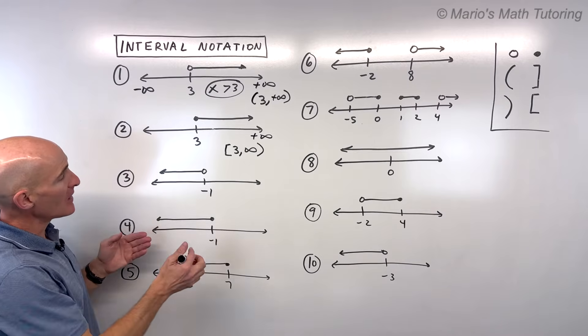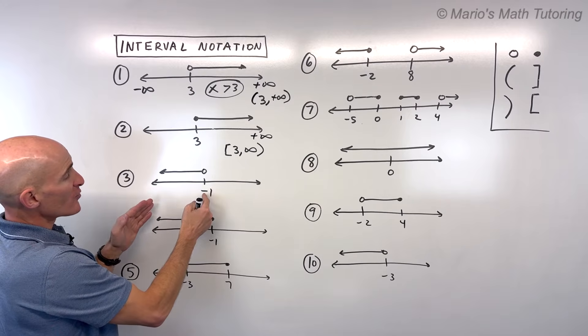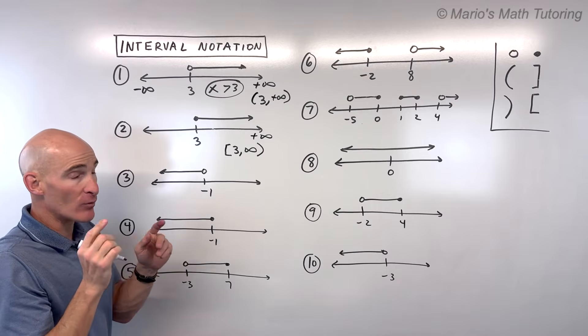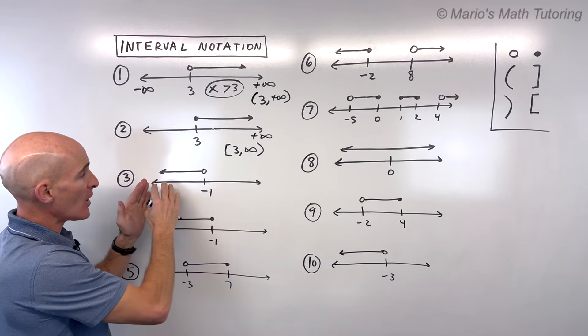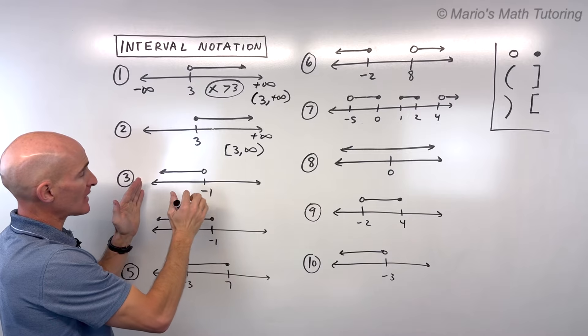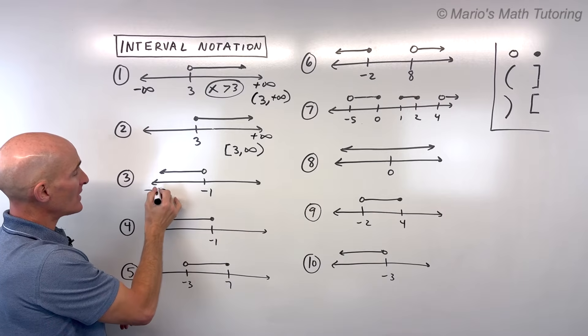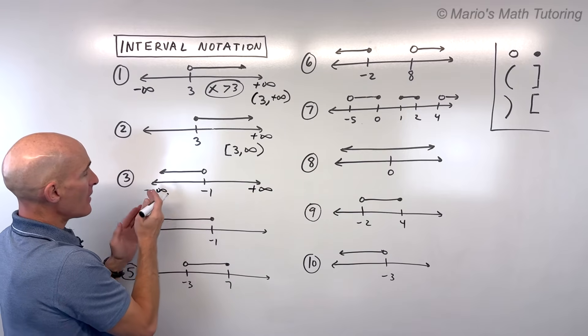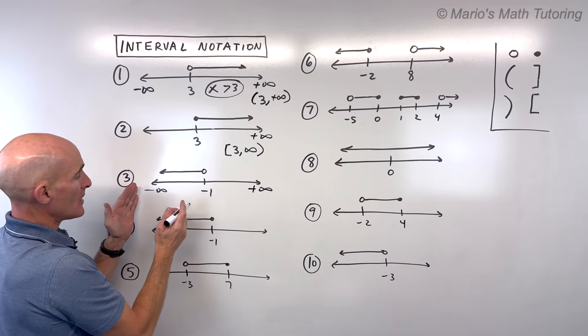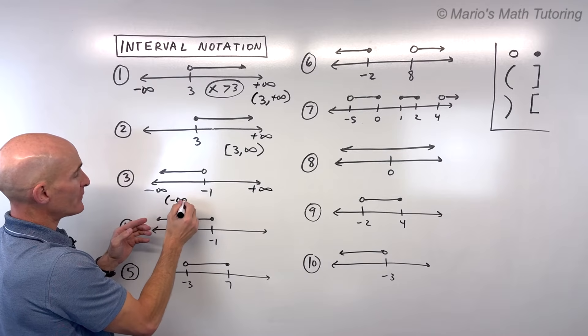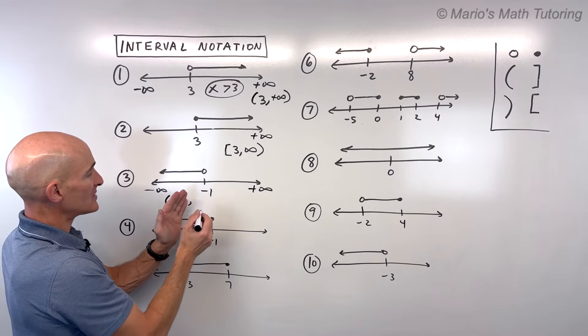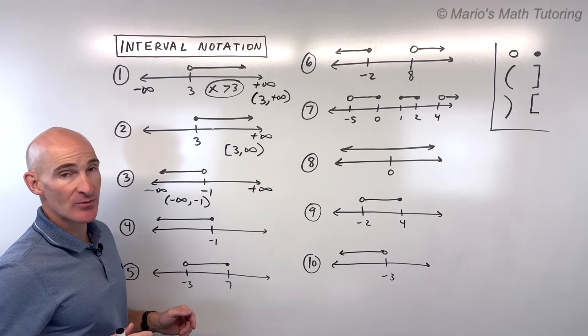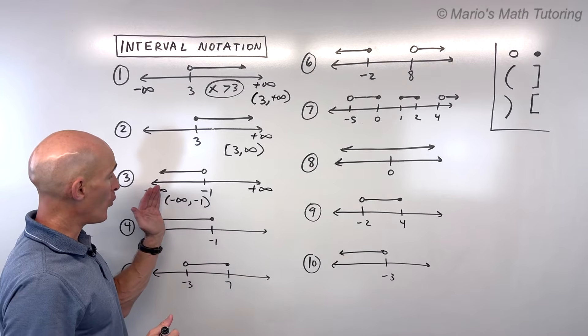For number 3, this would normally be written as x is less than negative 1. It doesn't include negative 1, everything less than negative 1. But when we think interval notation, it's helpful to graph it out on a number line, like I've done here. You might even want to put a negative infinity for the left side, positive infinity for the right side. Think about working from left to right. So we're starting over here at negative infinity all the way to negative 1, not including negative 1, so we have a parenthesis. Infinity always has a parenthesis. You can never reach infinity. That's open.